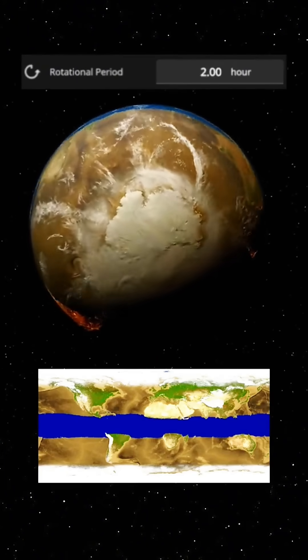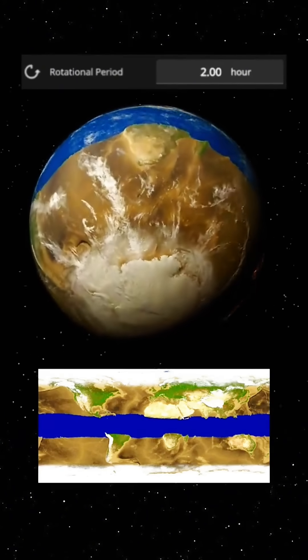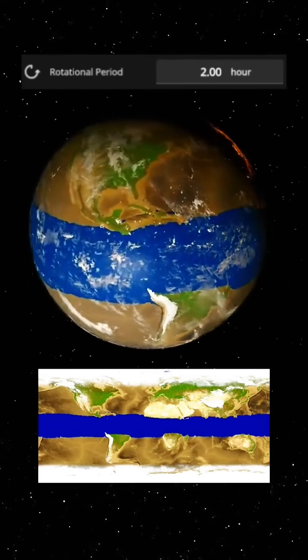The centrifugal force would reshape our planet, causing the equator to bulge outward while flattening the poles.